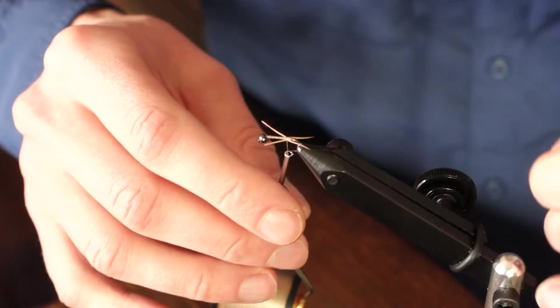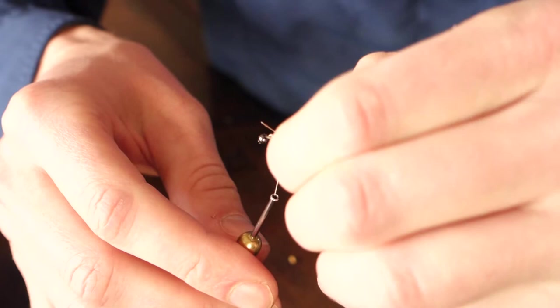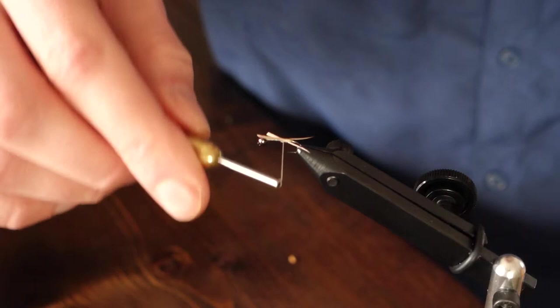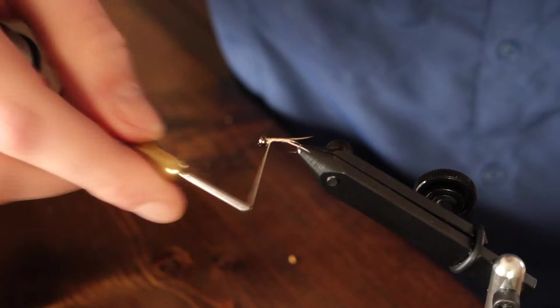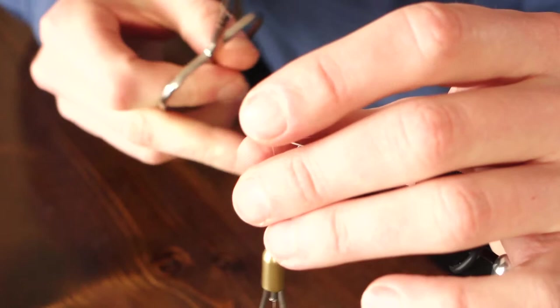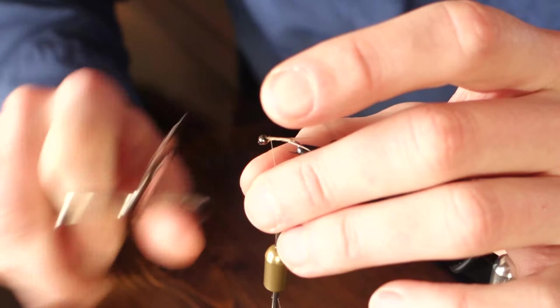Once I've got them to the right length, I'm going to make my thread wraps back up the shank. I'll leave the butt ends because they're just going to add to some of the bulk and body of the fly that I like. And then I'm going to snip off one of those butt ends which was a little bit longer. Then we can wrap our thread back towards the tail.